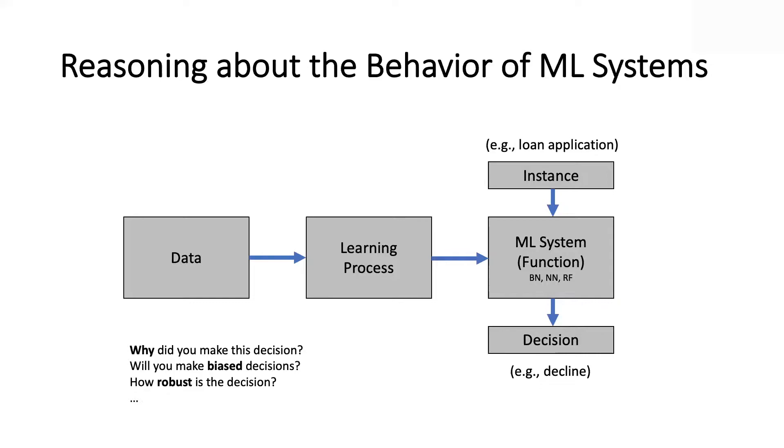The basic observation underlying this work is that while these systems are learned from data and numeric in nature, they typically implement discrete decision functions. The input is discrete and the output is discrete. So we can capture that input-output behavior in a symbolic way and then use that symbolic representation to do the reasoning.